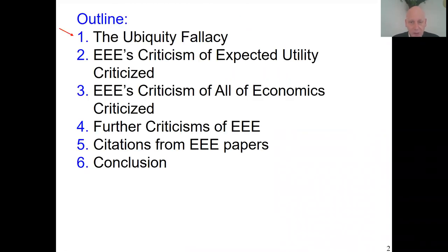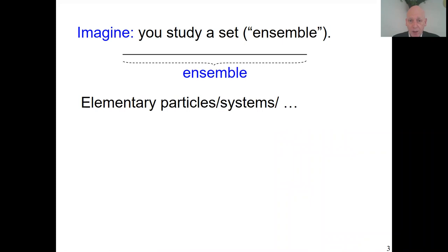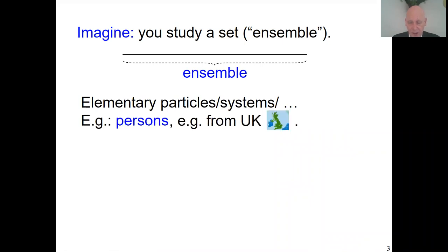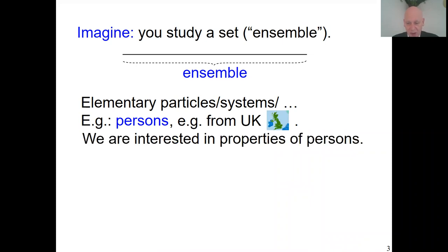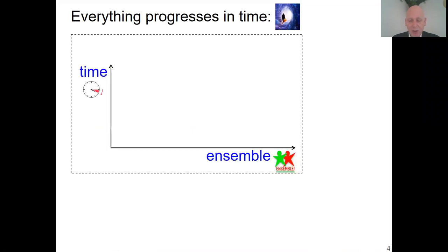My first criticism is the ubiquity fallacy. Imagine you're studying a set of objects — an ensemble. This can be anything, but persons, for instance. An ensemble can be the UK population. You're interested in properties of those persons: can be wealth, can be anything. But everything progresses over time, so let us bring it in. This figure with two axes I call the Ergodic Figure.